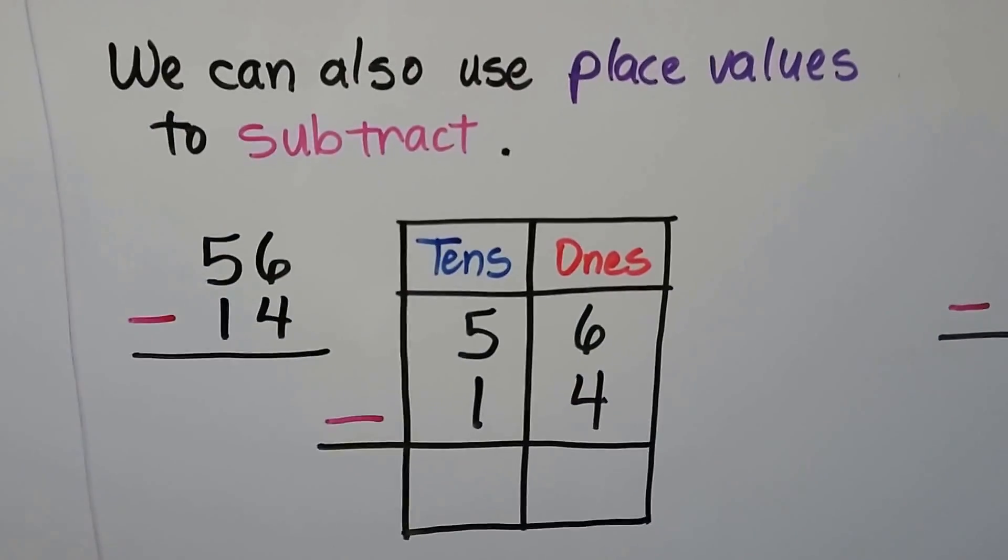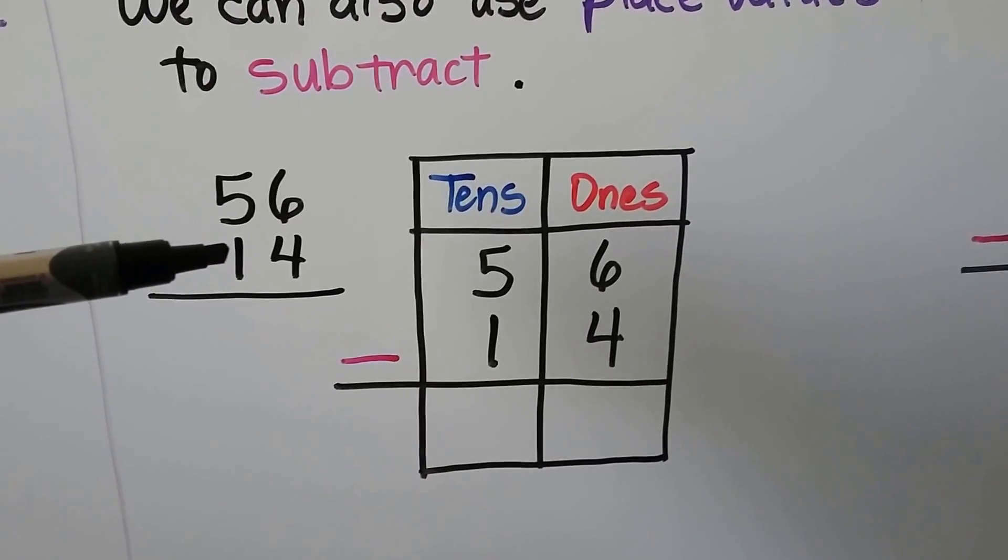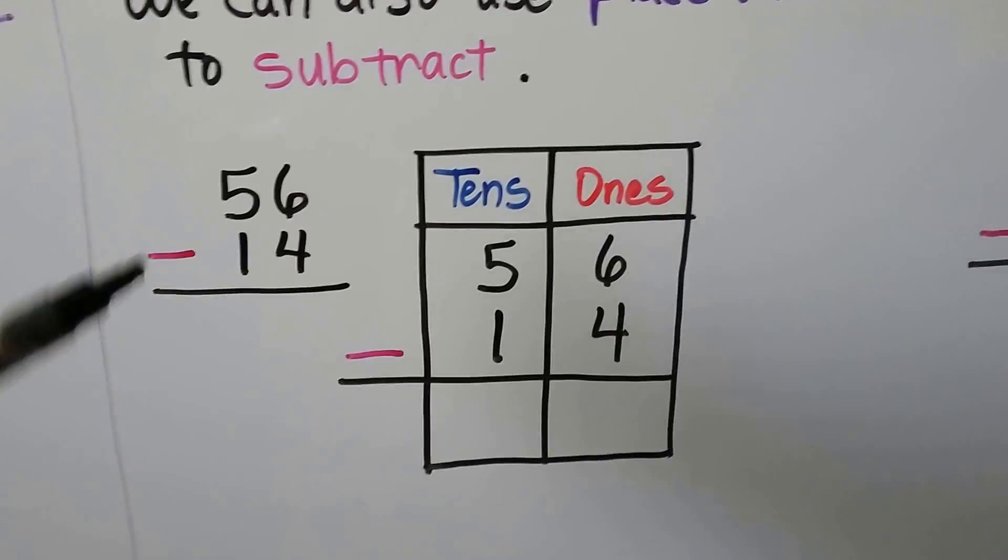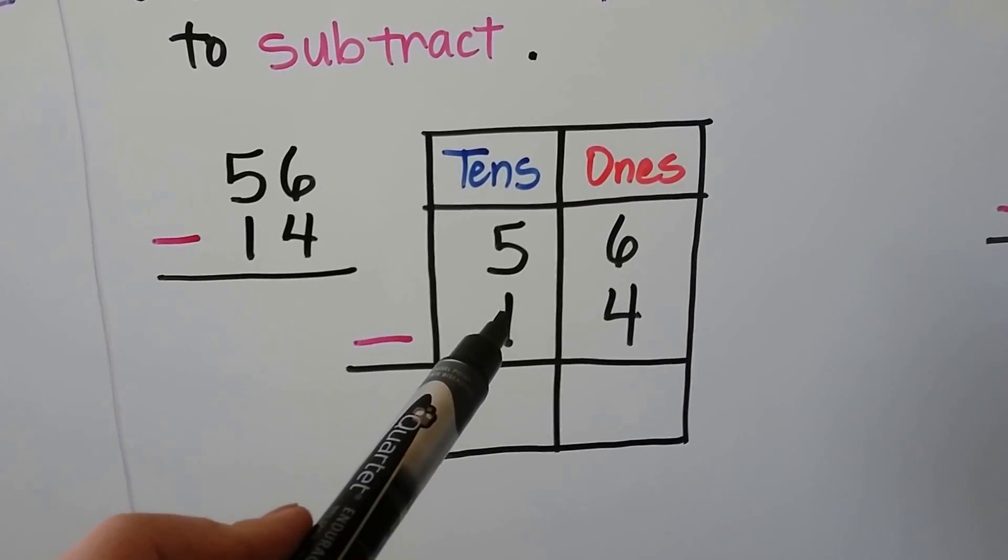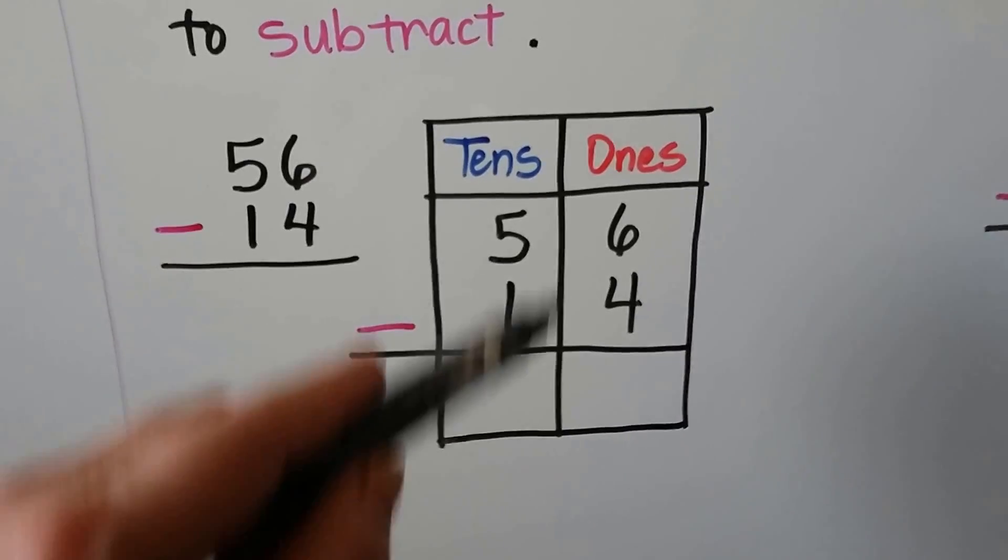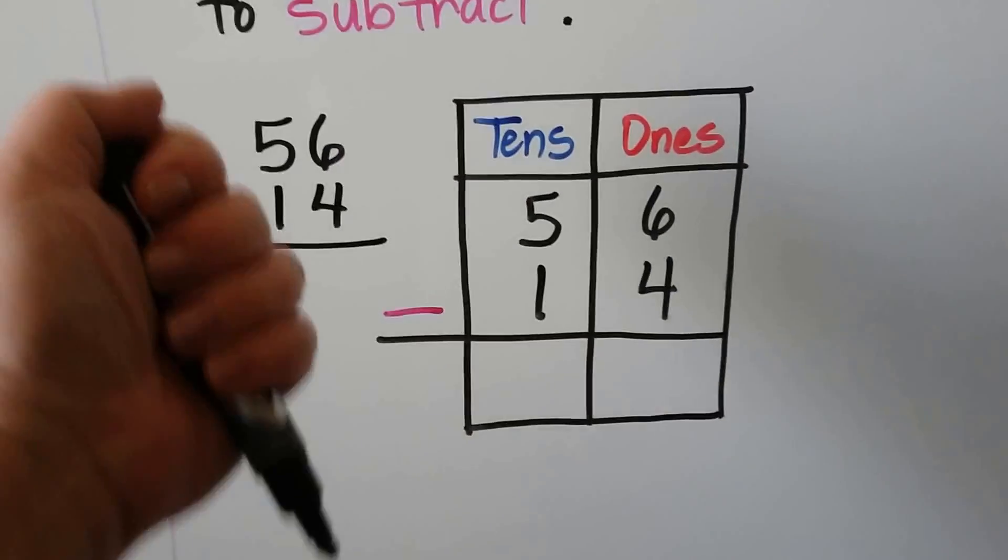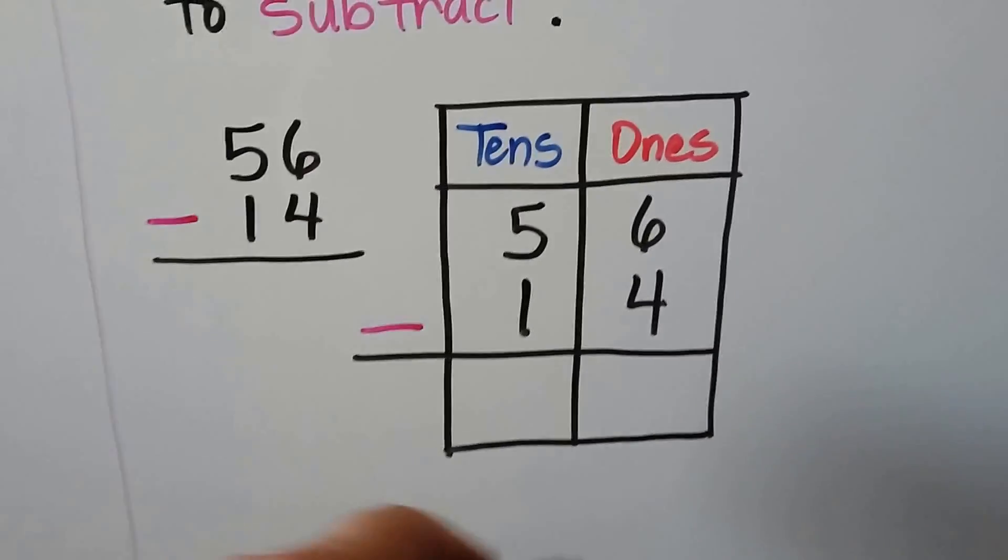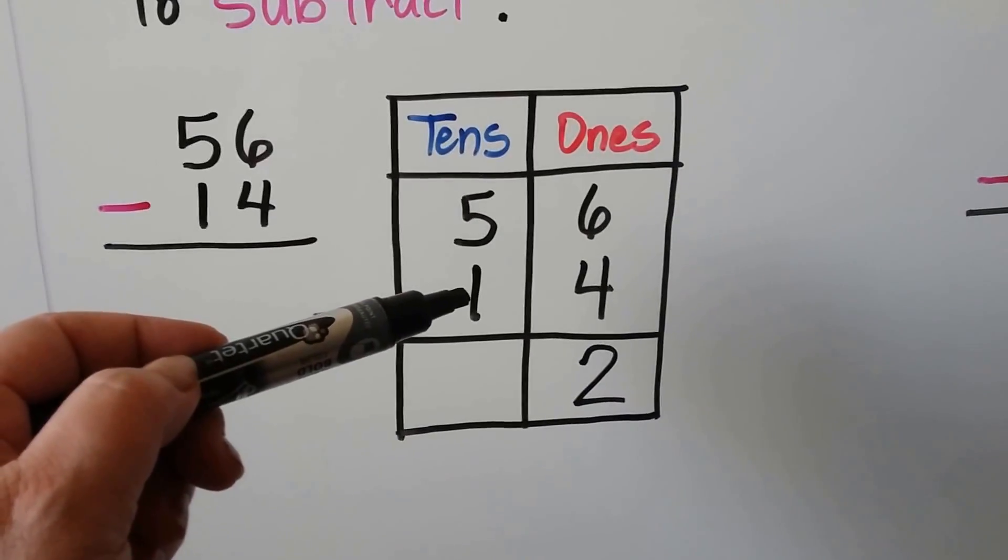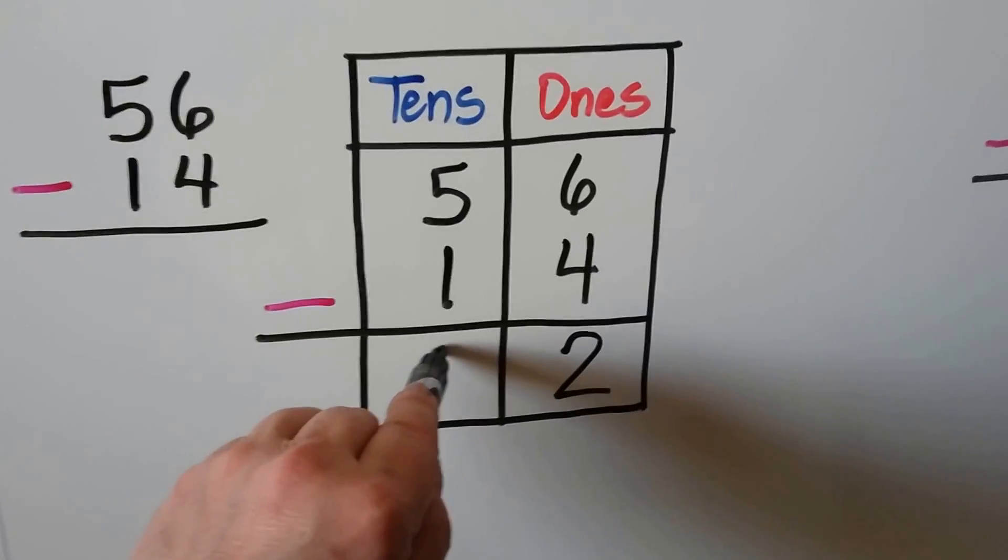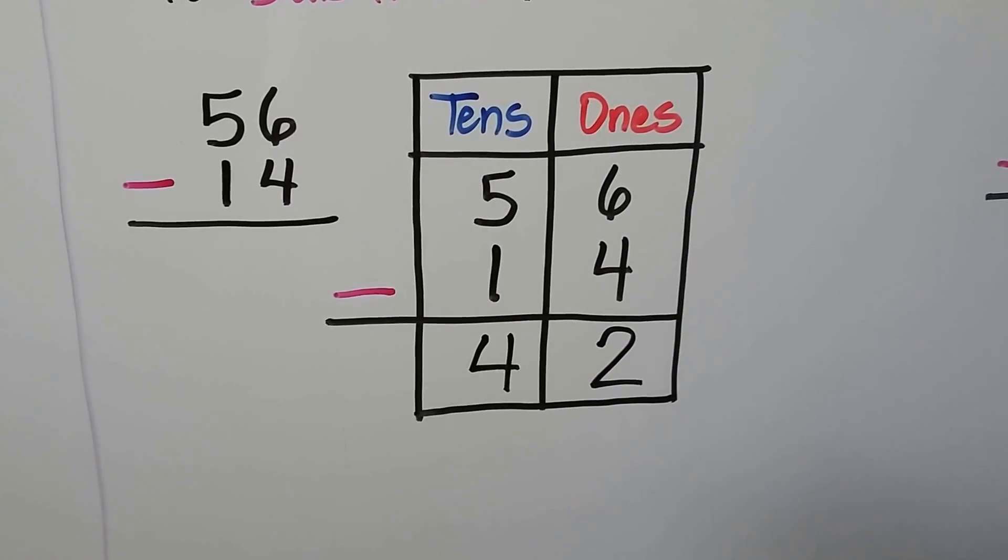Now we can also use place values to subtract. If we have 56 and we want to take away 14, 56 minus 14. We have 5 tens and 6 ones and we want to take away and subtract 1 ten and 4 ones. We start with the ones place. We have 6. We want to take away 4. We can count back 2: 6, 5, 4. We took away 2. 5 take away 1. 5 tens take away 1 ten. We leave 4 tens. So we know 56 minus 14 is equal to 42.